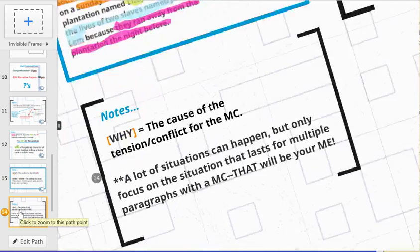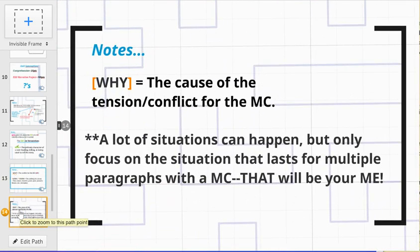Lastly, we have our why. When we think about the why, we're thinking about the cause of this tension or the conflict. It could be a person who caused this conflict to happen for this character, or it can be a situation, another event, an observation of something that causes conflict or tension for the main character.